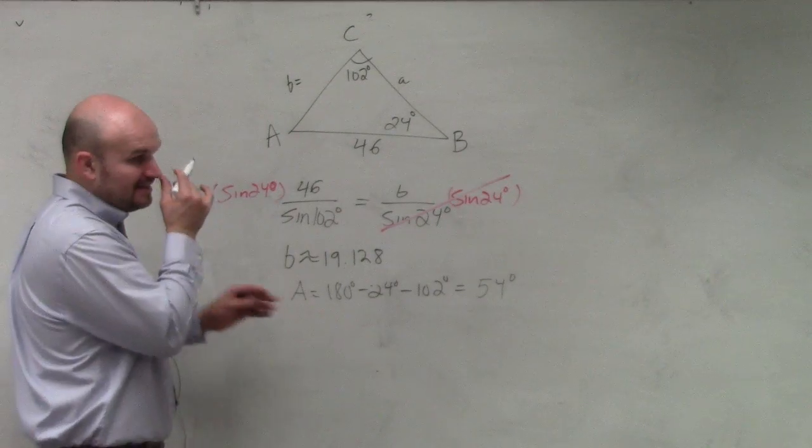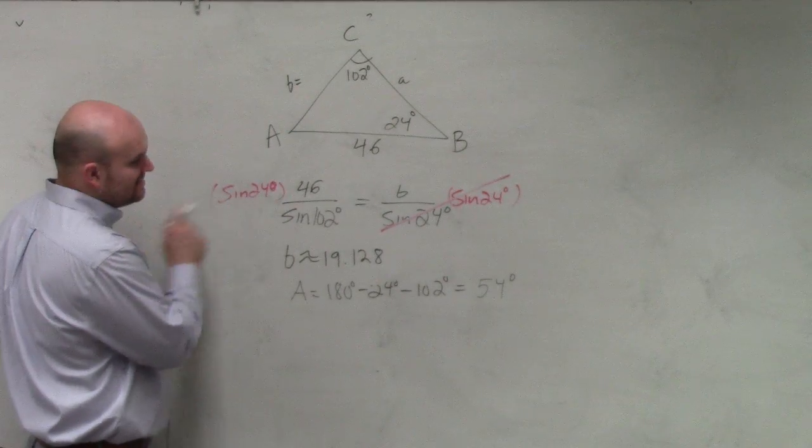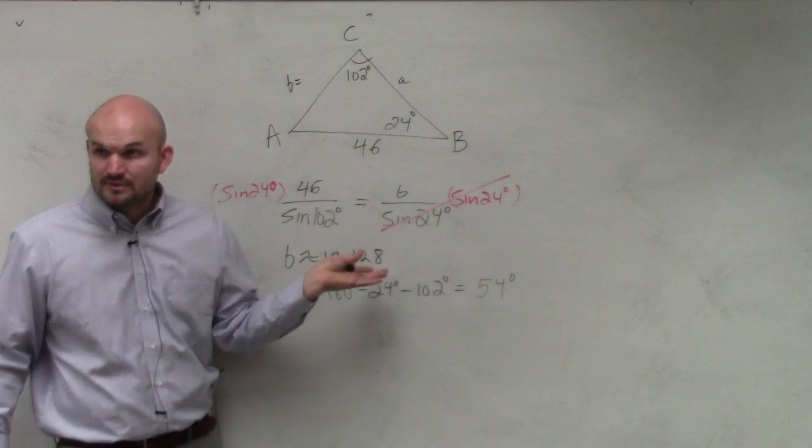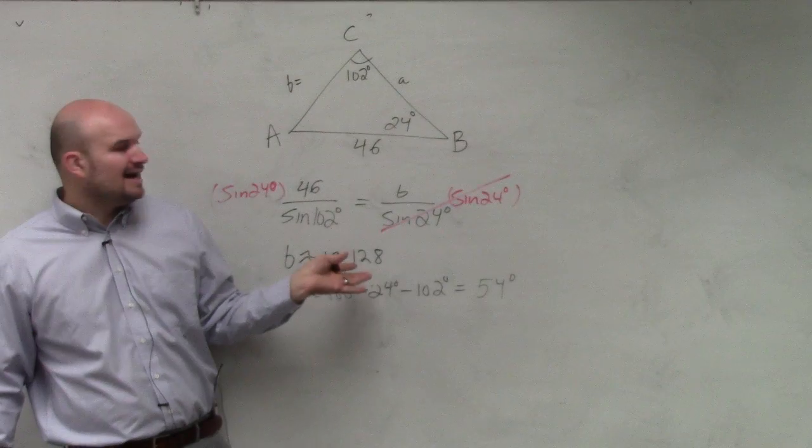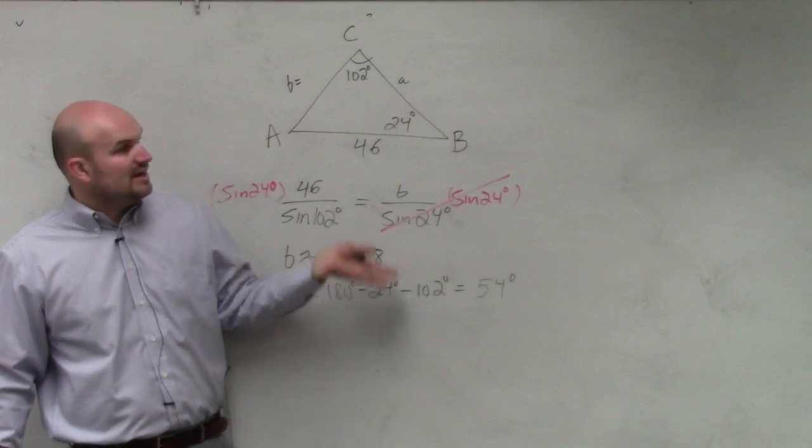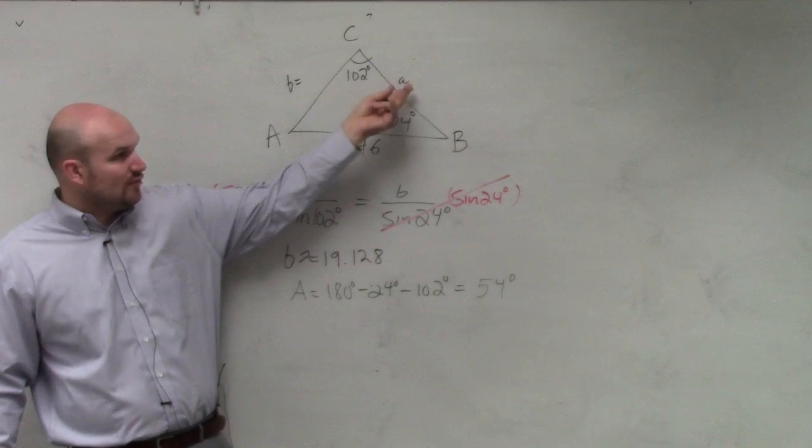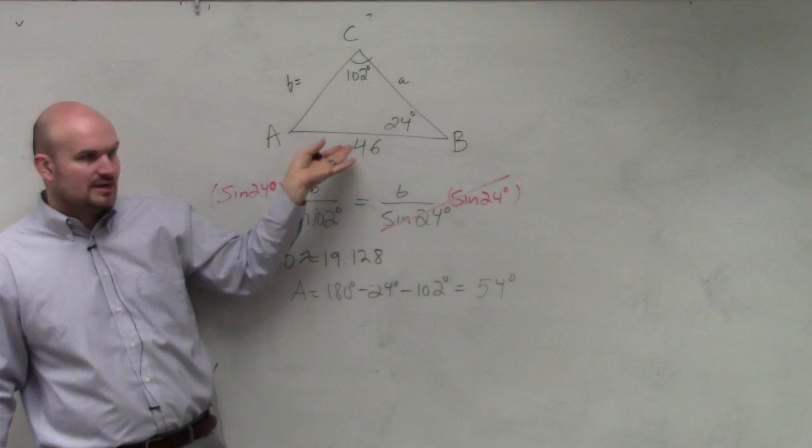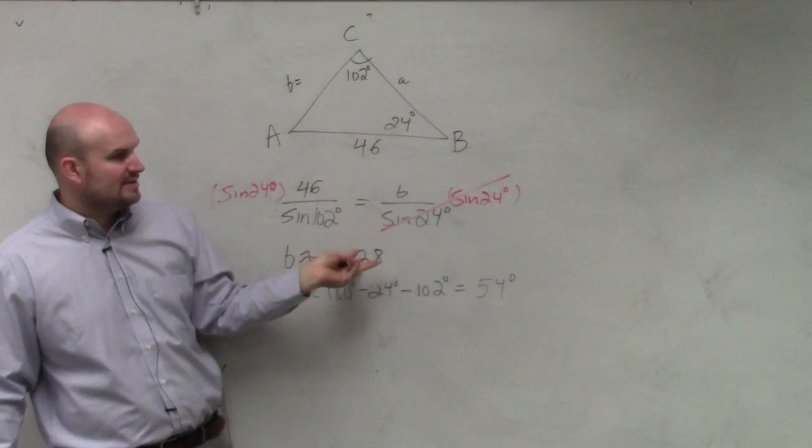Do we notice, you guys understood that we rounded this answer, right? You guys agree we rounded this? I don't want to use a rounded answer. We always want to use exact answers. So as I'm going to use the law of sines again to solve for A, I'm going to use, again, my ratio of C over C. I do not want to use B because I rounded that answer.